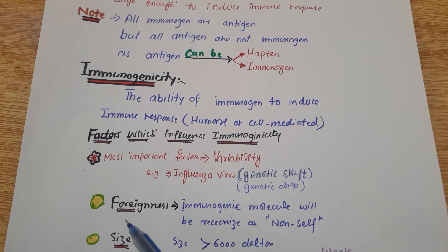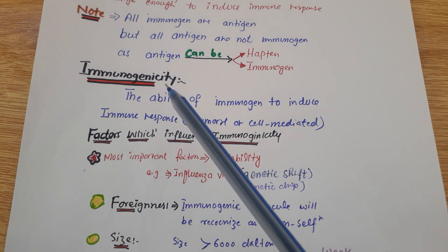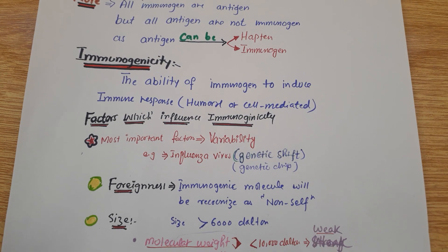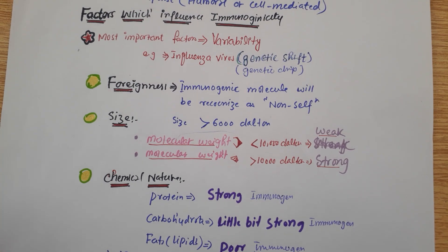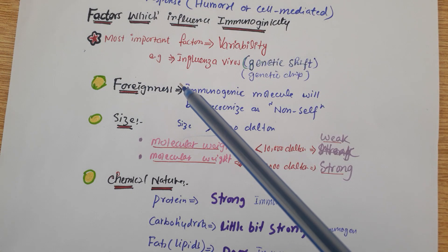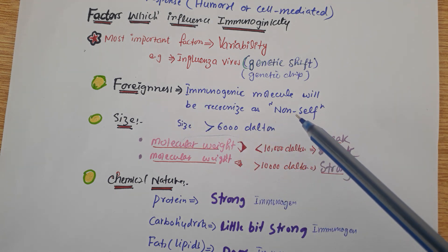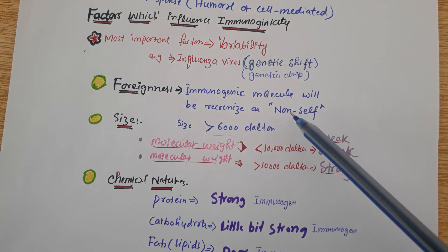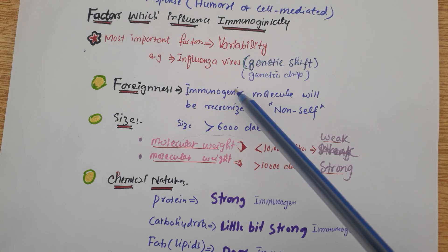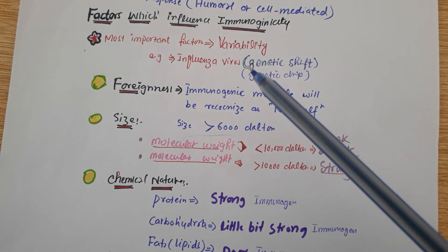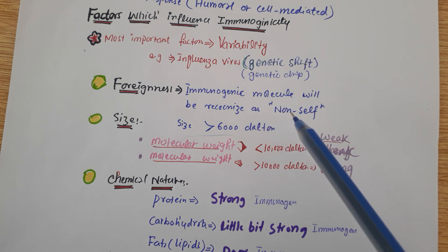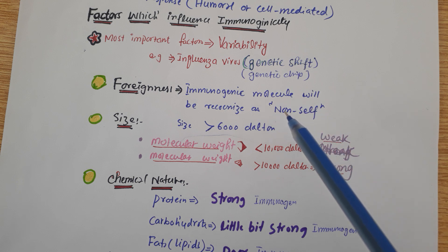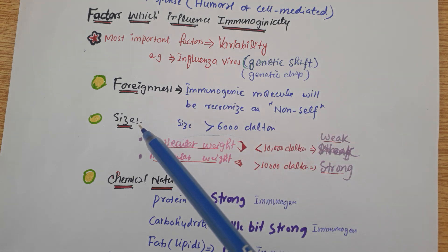Another factor which influences immunogenicity is foreignness. The immunogen must be recognized as non-self by our body, by our immune cells, and by our immune system. So the immunogen must be recognized as non-self.